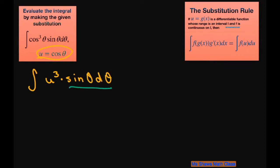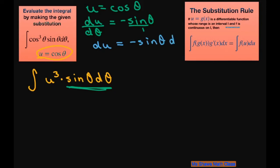Now I need this part to be in terms of u as well. So if u = cos θ, then du/dθ = -sin θ. Now you cross multiply, you get du = -sin θ dθ.